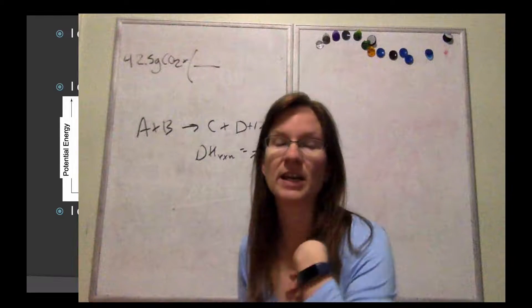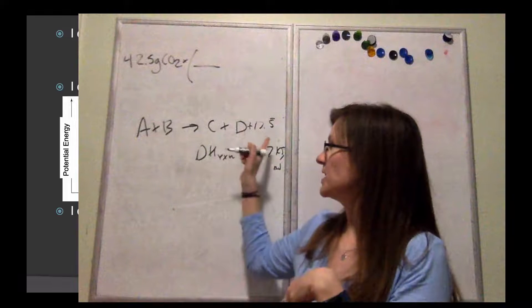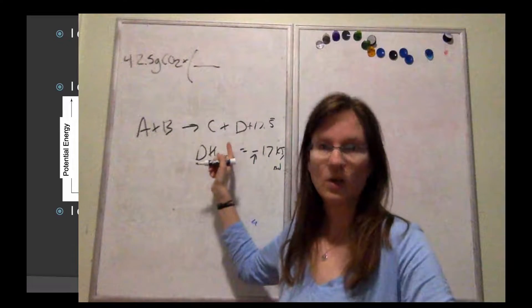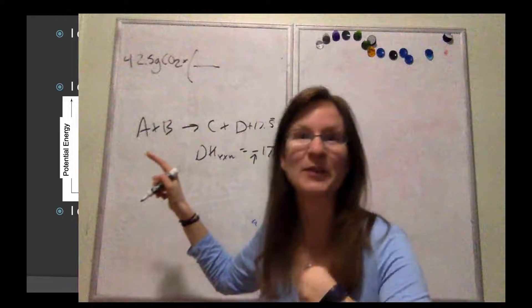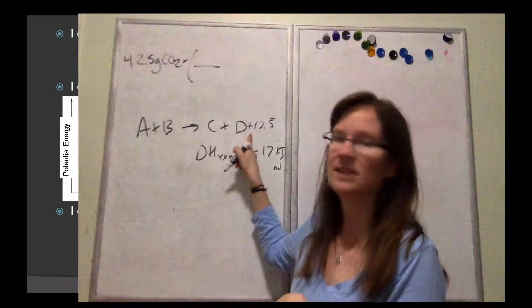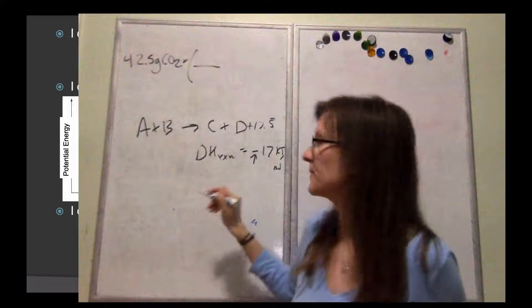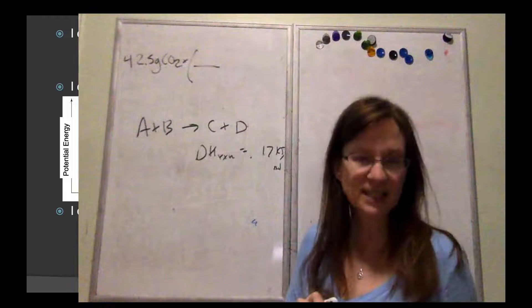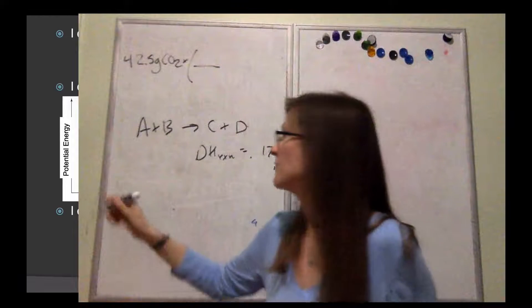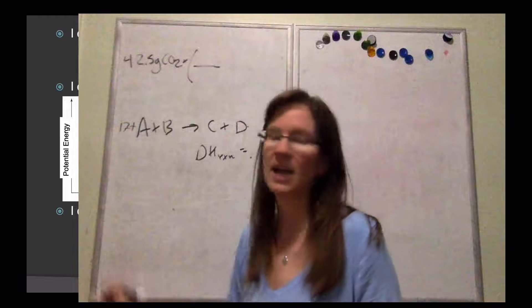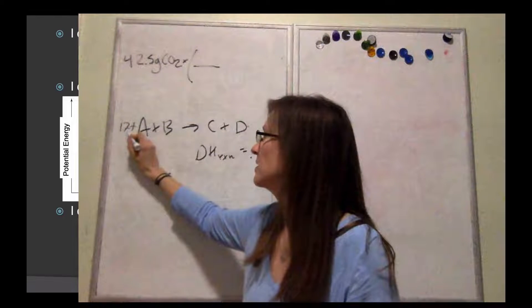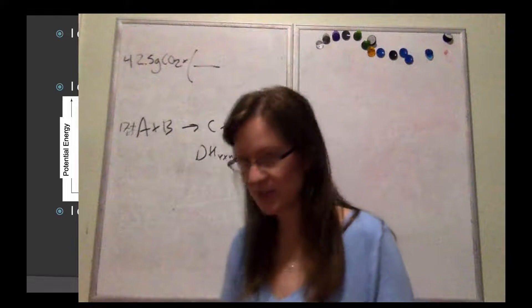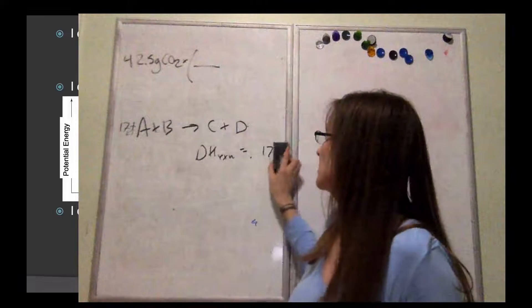That negative sign — when heat is not written within a chemical reaction — indicates that energy was released or exothermic. Once you place it as part of the reaction as a product, we don't need that negative sign anymore because the location tells us it came out. Everything on the product side was released or given off. So the placement is the sign. If instead the heat of reaction was positive — you took in 17 kilojoules — that means it's endothermic, and the heat is always written on the reactant side with units.